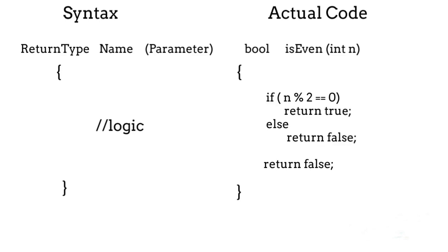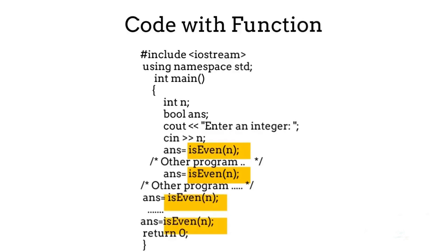After the parentheses we write the logic inside curly brackets. The modulo operator is used to find the remainder. If number modulo 2 equals 0, then we know the number is even and we return true; otherwise the number is odd and we return false. Our function for checking even or odd is ready. Now we replace the repeated code logic with our function call.